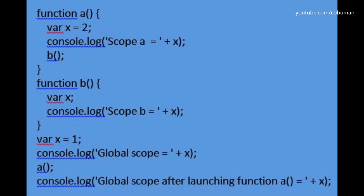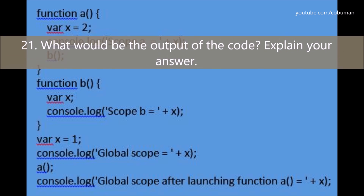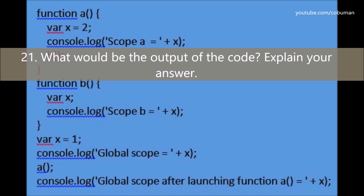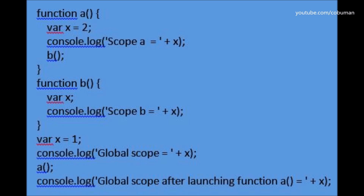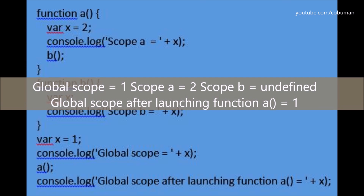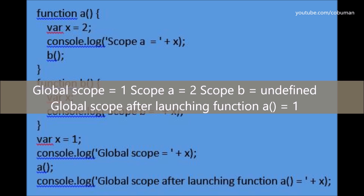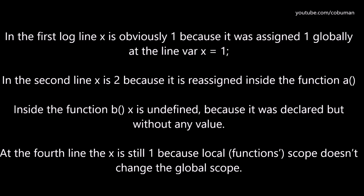Bonus question number twenty-one: What would be the output of this code? Explain your answer. The answer is: global scope equals one, scope A equals two, scope B equals undefined, global scope after launching function equals one. In the first log line, x is one because it was assigned one globally. In the second line, x is two because it's reassigned inside function A. Inside function B, x is undefined because it was declared but without any value. At the fourth line, x is still one because a local function scope doesn't change the global scope.